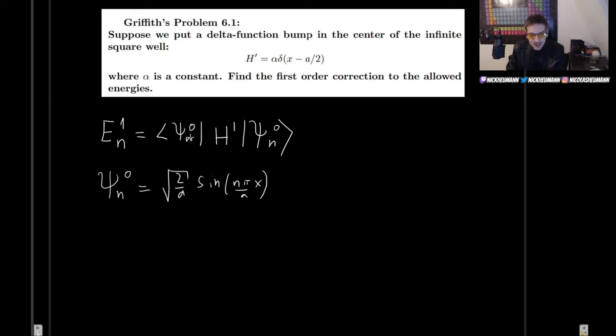And now we simply have to plug this into the equation. Now, since this is bra, this is ket, remember to take the complex conjugate of the wave function. But since it's real, there is actually not going to be any difference. So the energy levels are going to be the integral from 0 to a of square root of 2 over a sine of n pi over a x. This is the first part.